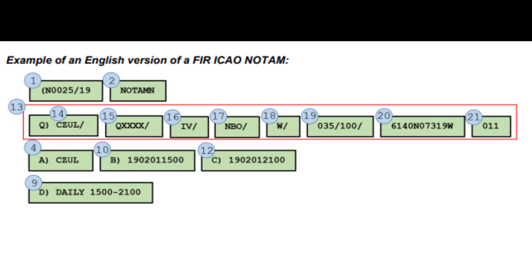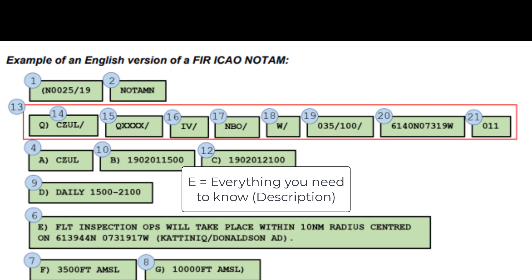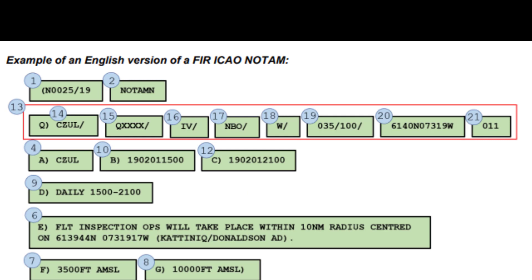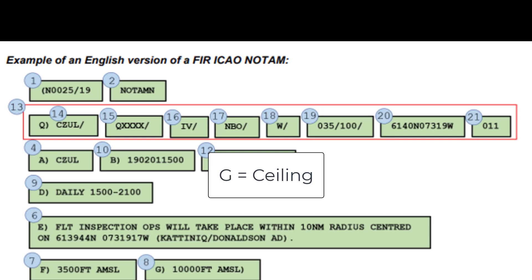The E field contains the full NOTAM description — everything you need to know about the NOTAM. The F field tells you where the floor of this NOTAM is, or if there is no floor and it goes all the way to the ground, it'll just say 'surface.' The G field is the ceiling of the NOTAM, and if there is no ceiling, it'll show UNL for unlimited.